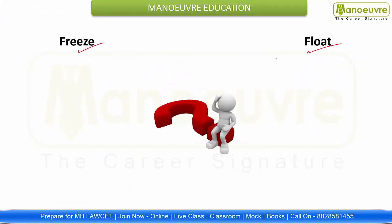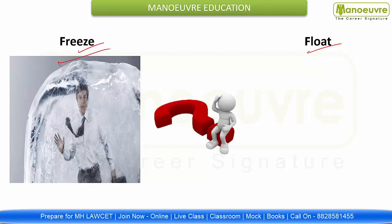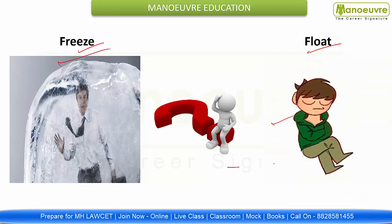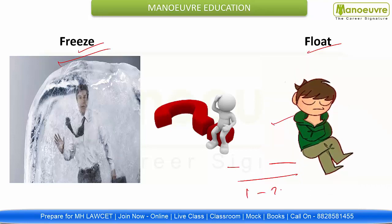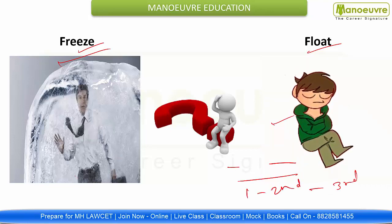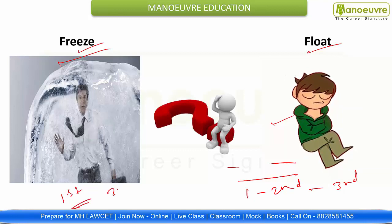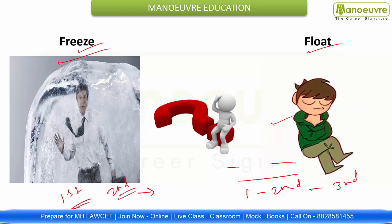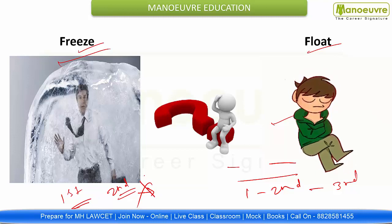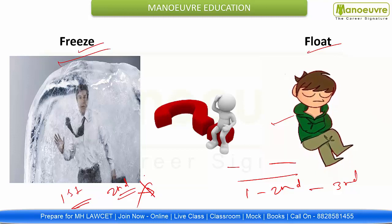Friends, if we talk in a very simple way: freeze means to settle at one place — you stop there. Float means you are floating — moving from here to there. From first round to second round, second to third round. But freeze means if you freeze in Round 1, you stay there; if you freeze in Round 2, you stay there — you cannot move further. This is the simplest way to understand what exactly the freeze and float options are.